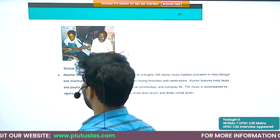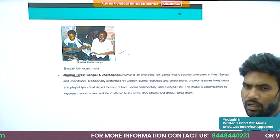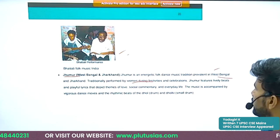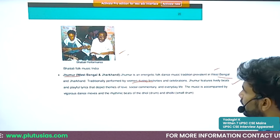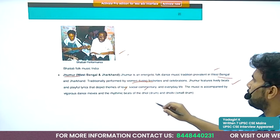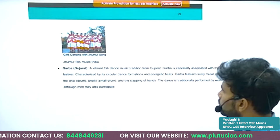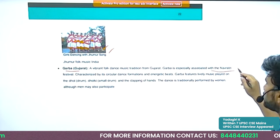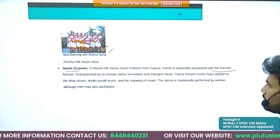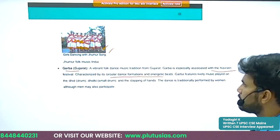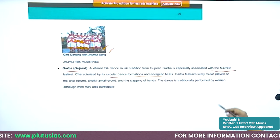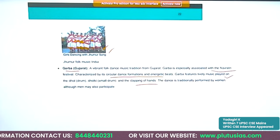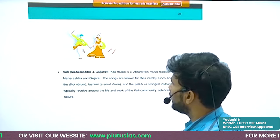Jhumur is associated with West Bengal and Jharkhand, traditionally performed by women during festivals and celebrations; it features lively beats, playful lyrics, and themes of love, social commentary, and everyday life. Garba music and dance are associated with the Navratri festival, characterized by circular dance formations and energetic beats, with lively music played on the dhol, dholki, and clapping of hands.